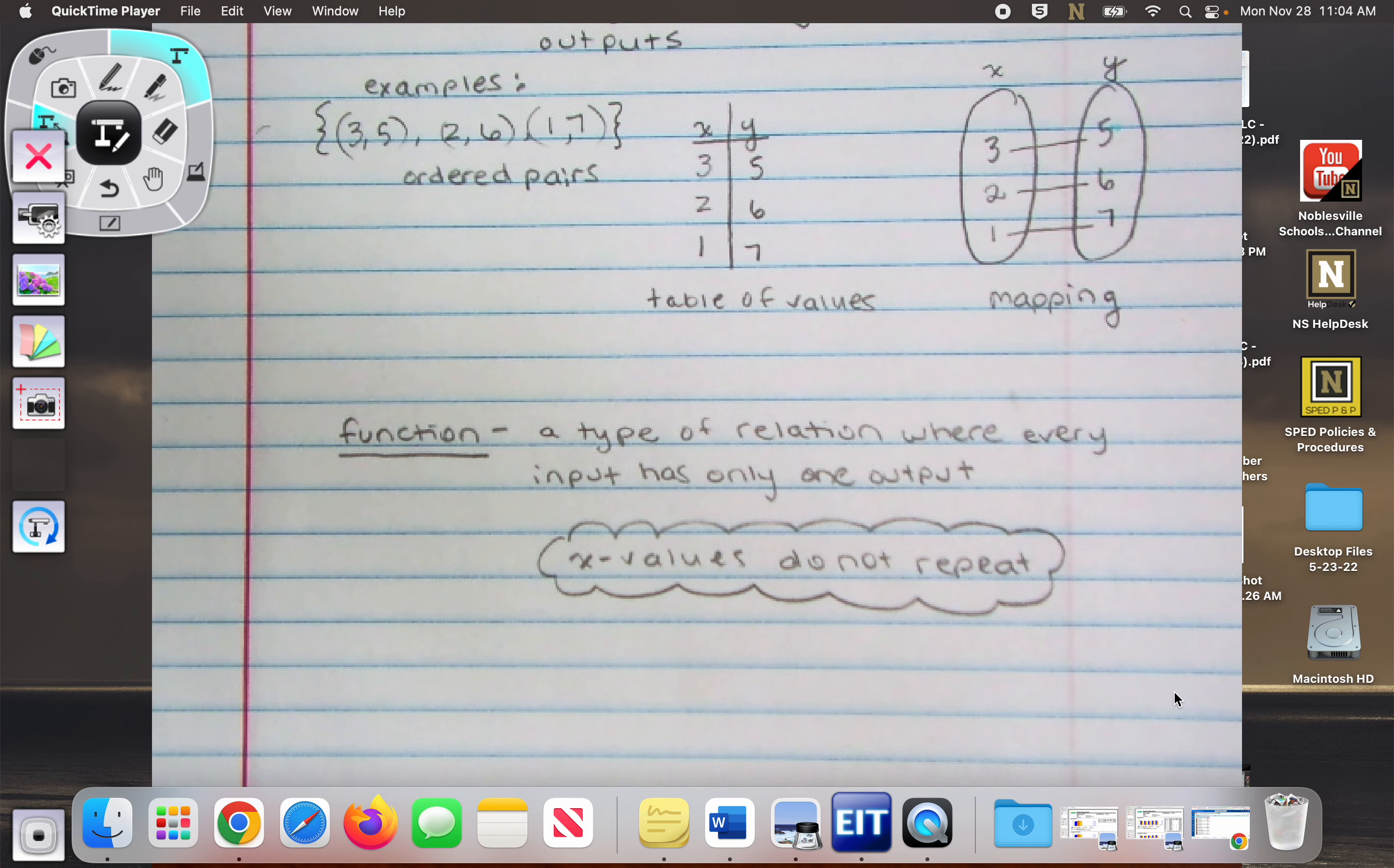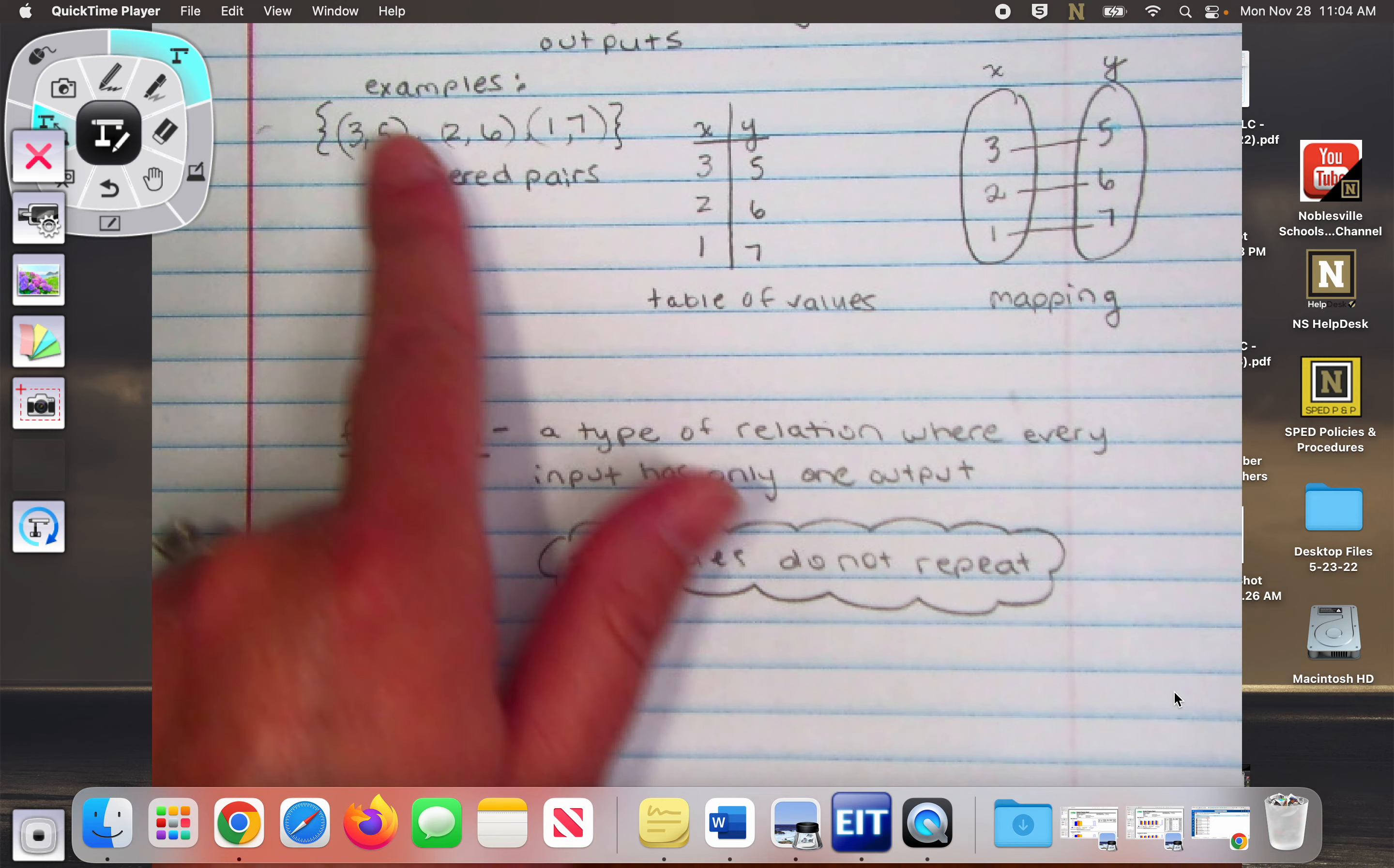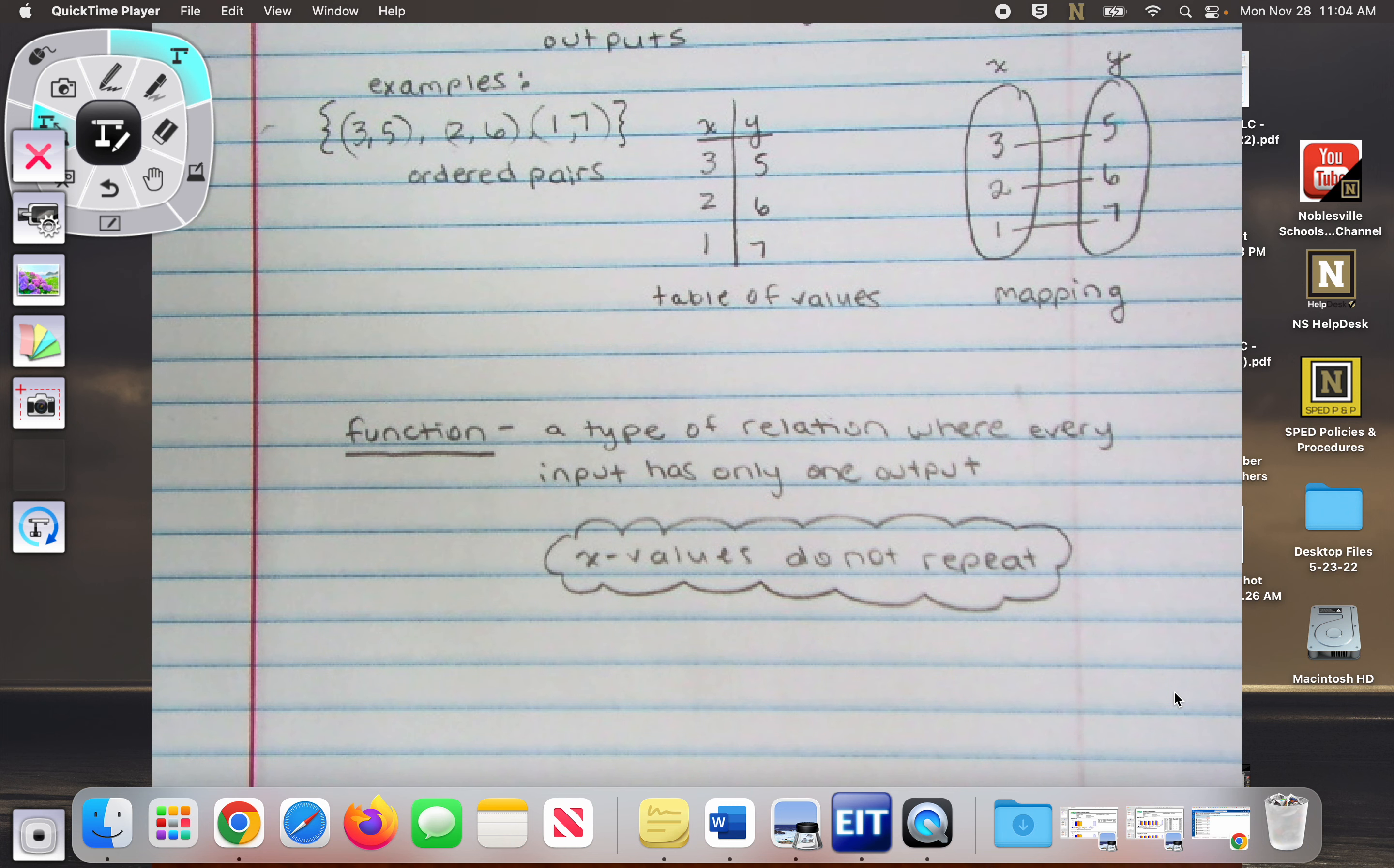Okay? So if I'm looking at a set of ordered pairs or at a table values or at a mapping, if any of my x values repeat, it automatically becomes not a function. If all of the x values are different, it stays a function. So right here, do I have a function up here? Do any of my, if I'm just looking at my ordered pairs, do any of the x values repeat? No. No. If I write it as a table of values, do the x values repeat? No. How about with this mapping? Do any of these numbers get used more than once? No. So this would be considered a function.